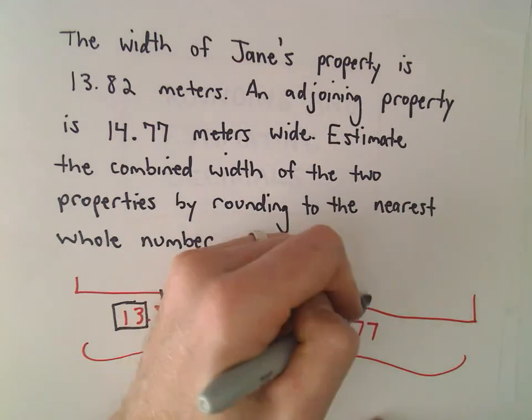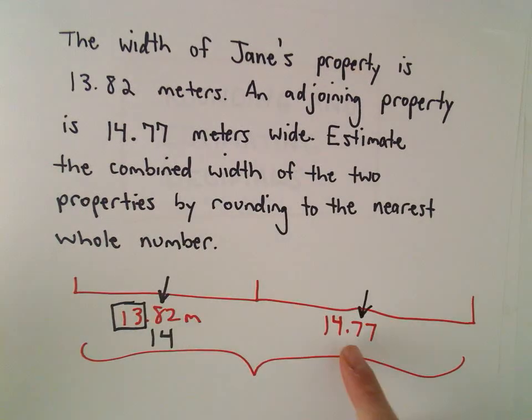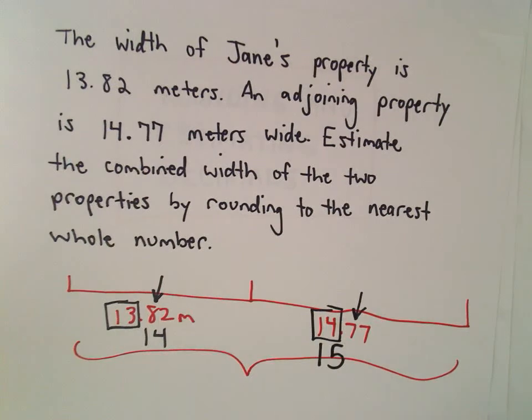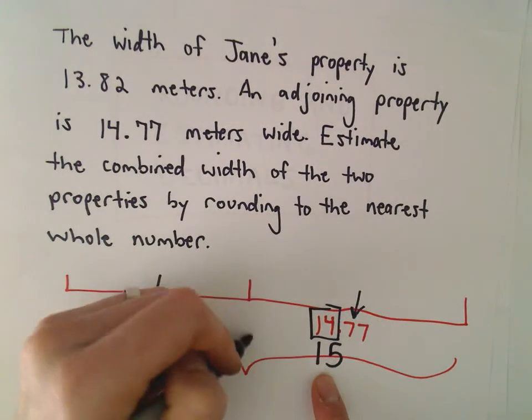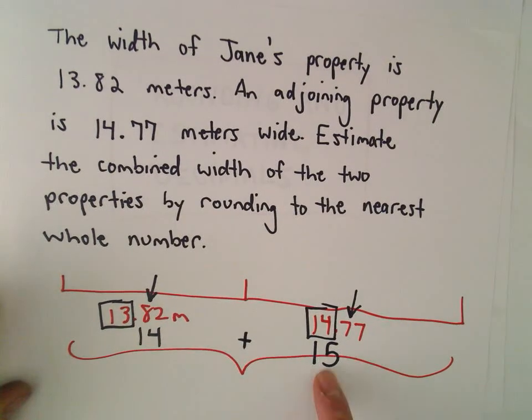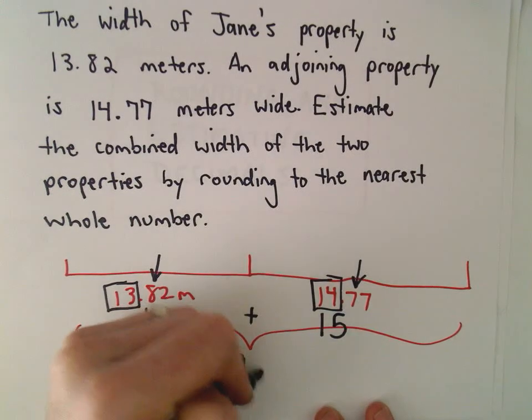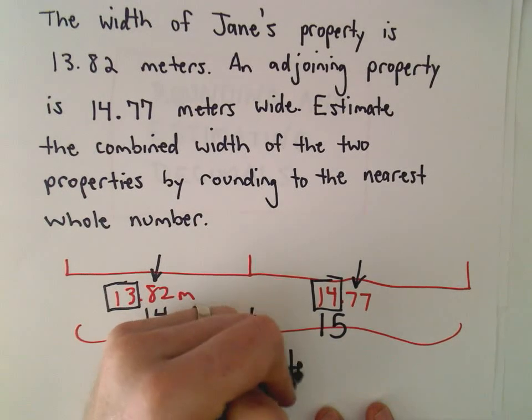And then 14.77, so again, all I need is the tenths digit. The 7, since that's 5 or larger, we're going to increase the whole number by 1, so that's pretty close to 15. So we've got 14 meters plus 15 meters, so that whole property is going to be roughly 20 meters wide.